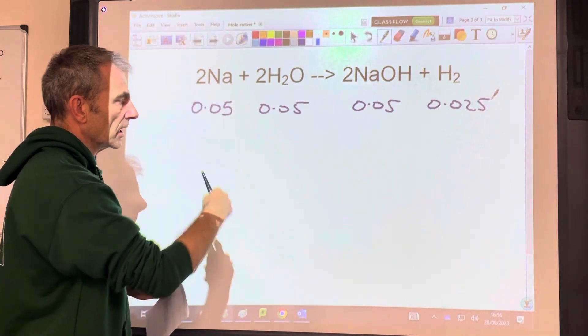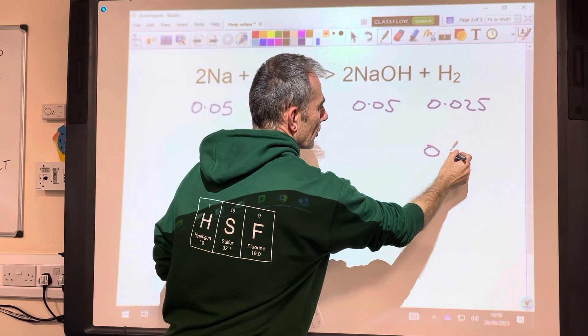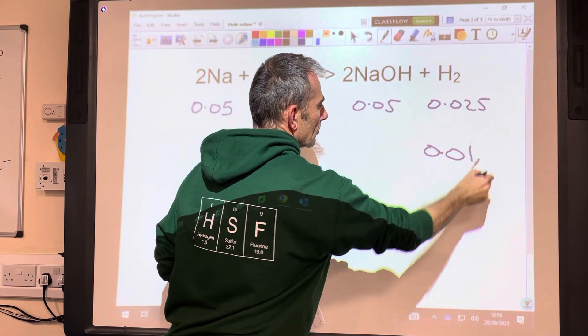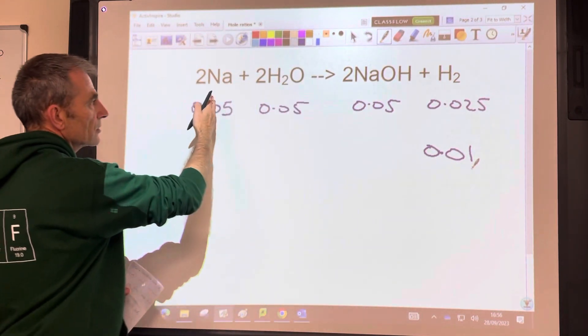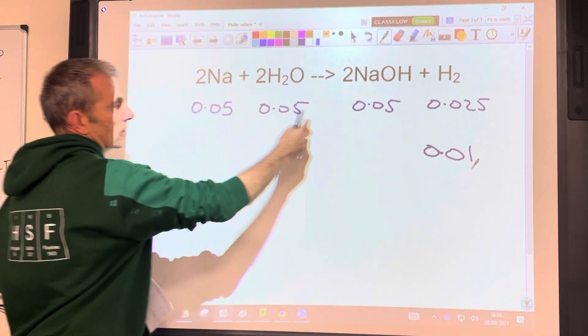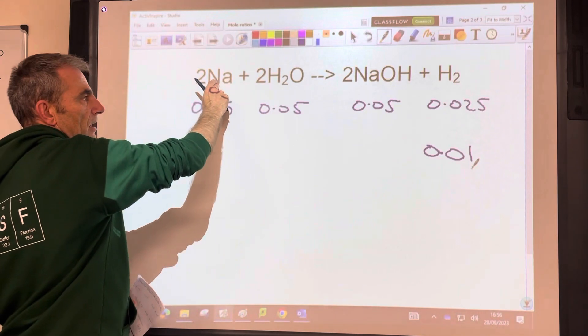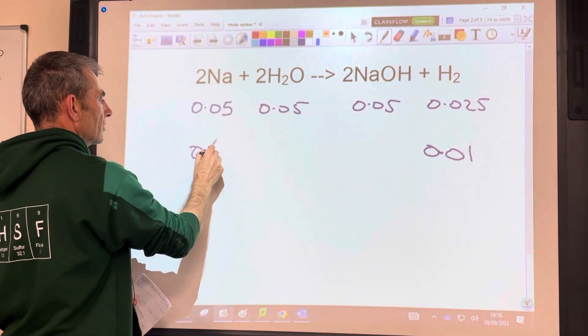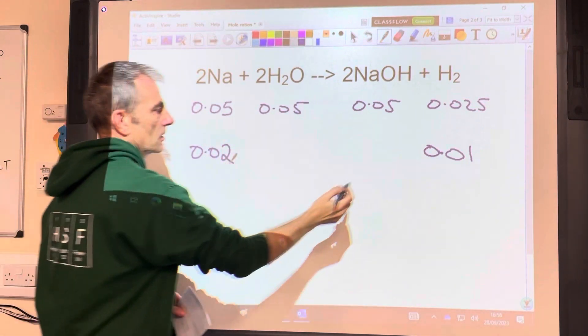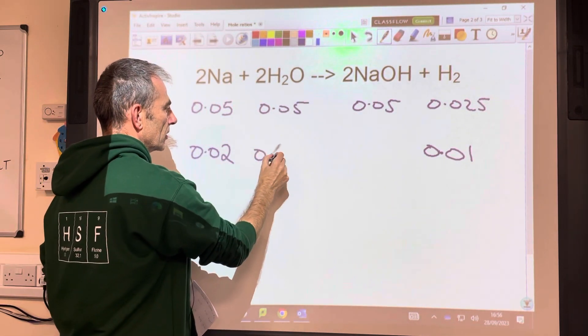OK, so let's apply it backwards now. So let's suppose we wanted to make 0.01 moles of hydrogen. So how many moles of sodium would we need? Well, apply the ratio this way. So 1 mole of that needs 2 moles of that. So that many moles would need double. So it's going to be 0.02. If we want to make that many moles of that, we're going to need double the moles of water. So it's 0.02 again.